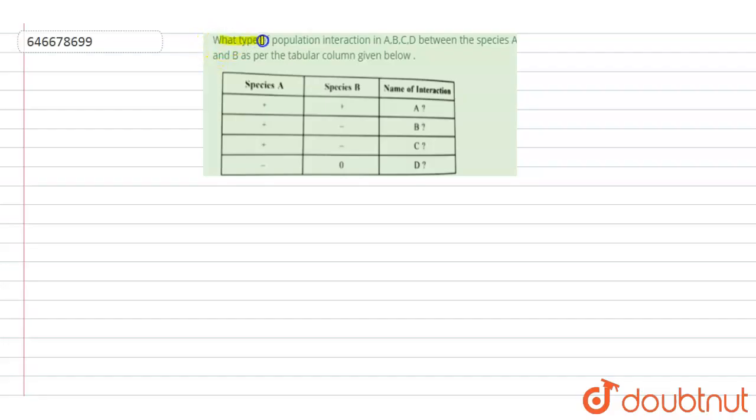The question is: what type of population interaction in A, B, C, D between the species A and B as per the tabular column given below? So here we are given the table. We have to find out the interaction between species A and B and name of interaction.